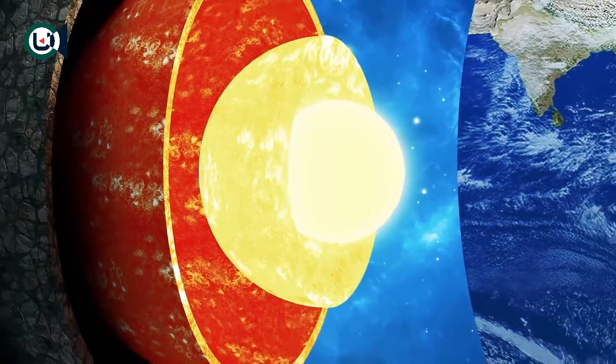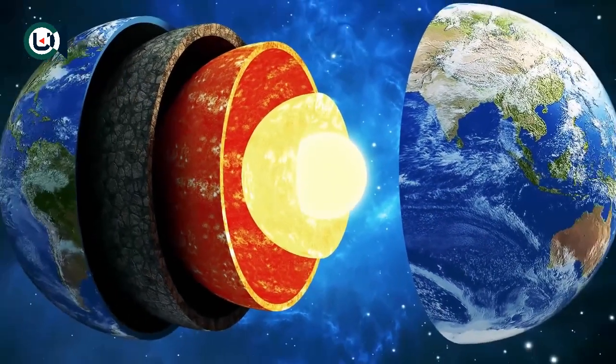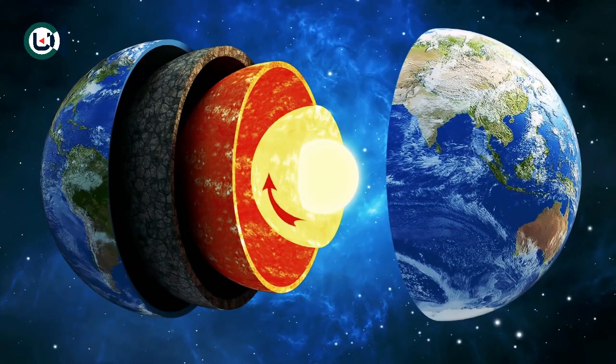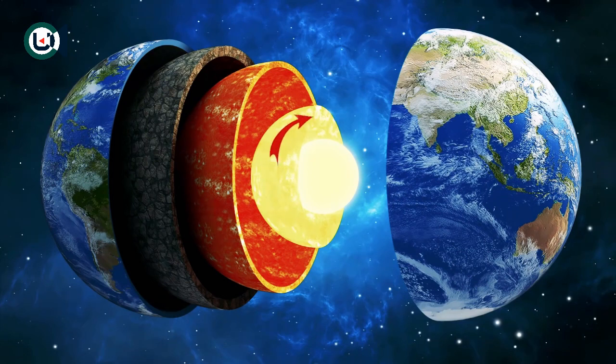If the Earth stops spinning, you have to take into consideration that the inner core of the Earth is spinning at a faster rate. Just because the surface has slowed down doesn't mean the core of the Earth has stopped too.